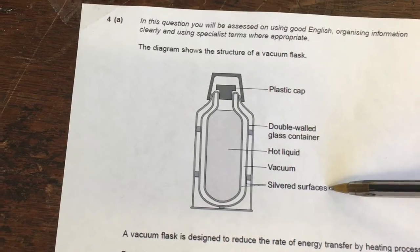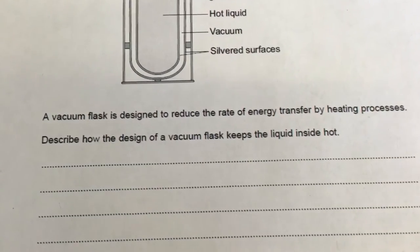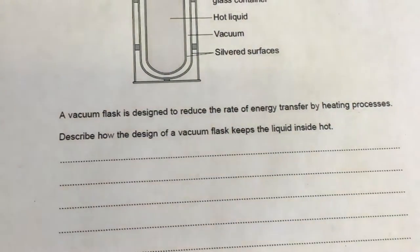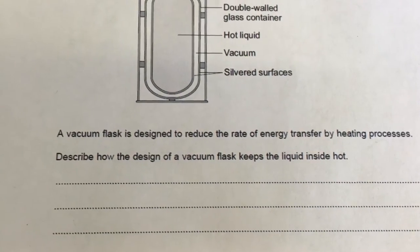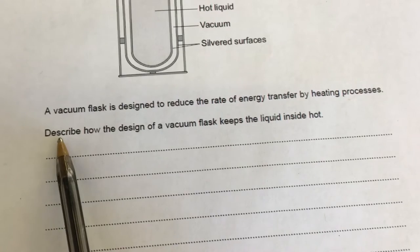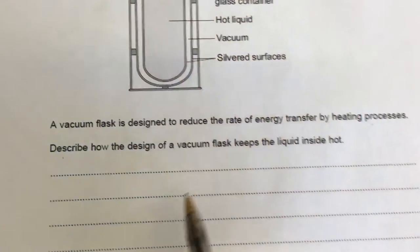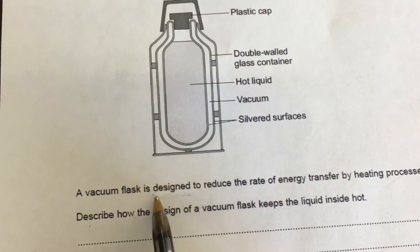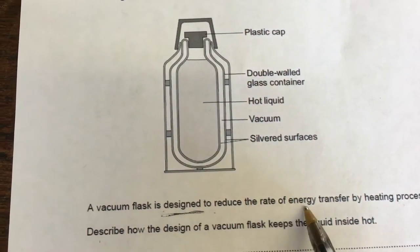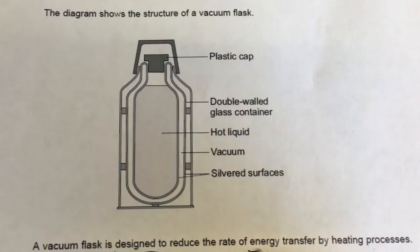Silvered surfaces doesn't mean it's silver — you can get plastic or glass that's also silvered-coloured. The question says: a vacuum flask is designed to reduce the rate of energy transfer by heating processes. Describe how the design of the vacuum flask keeps liquid hot. The word 'describe' means write a detailed answer covering what happens and where. The design features and reducing energy transfer are both key focuses.